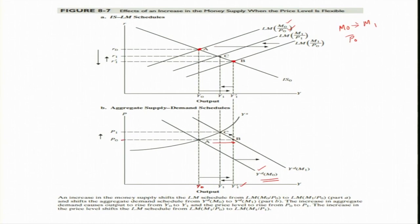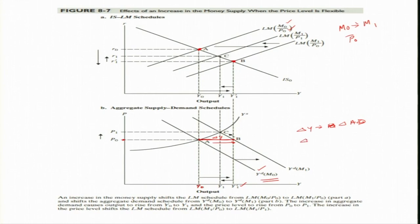At the given price level P naught, the aggregate demand is delta Y. But firms — the producers of goods and services — are not willing to increase output by delta Y at this price level. The aggregate demand change, delta Y, must also be matched with aggregate supply, but producers are already at equilibrium and are not willing to increase output equivalent to delta Y. They will do so only at a higher price.